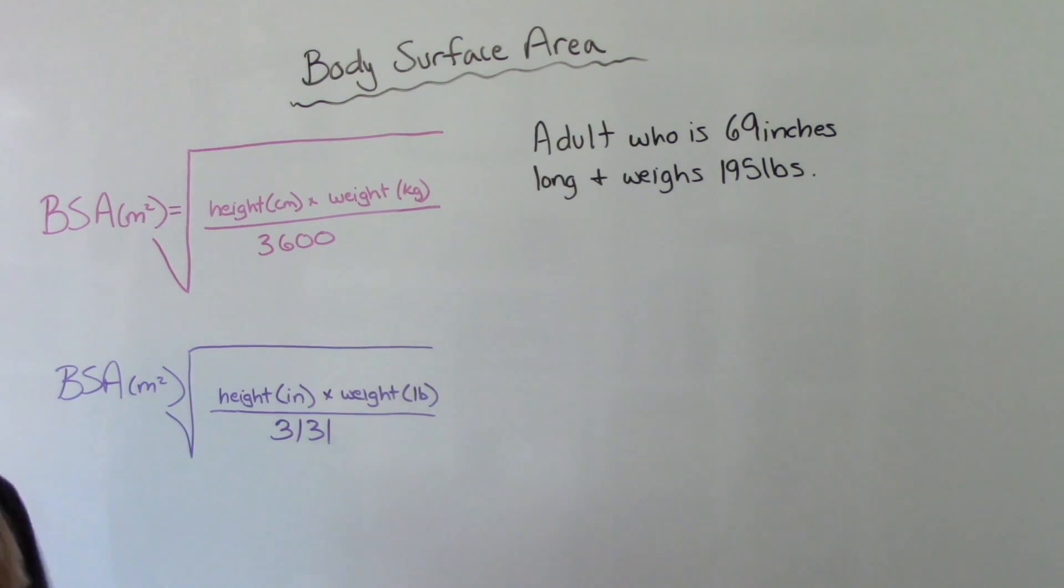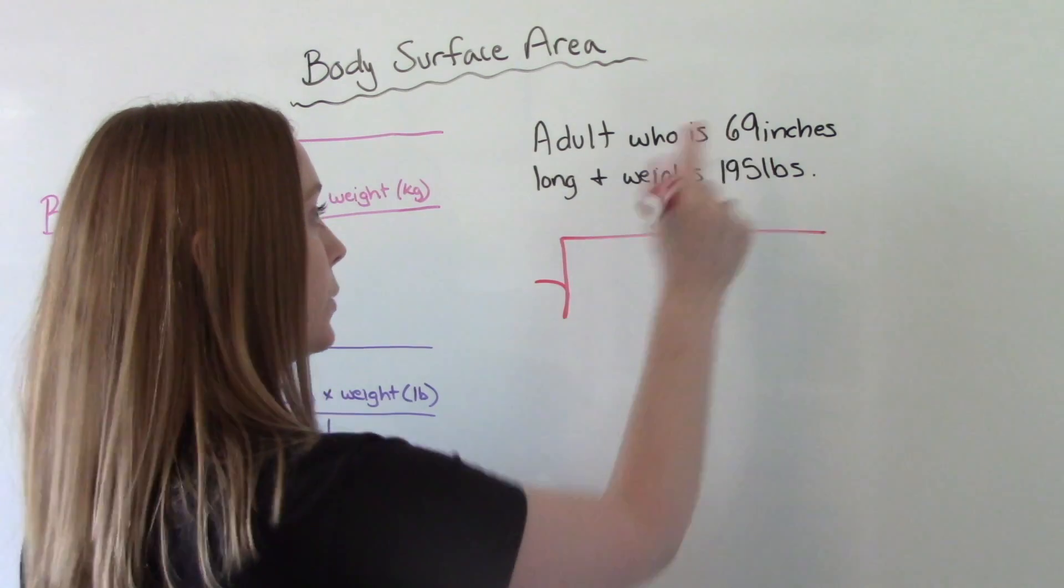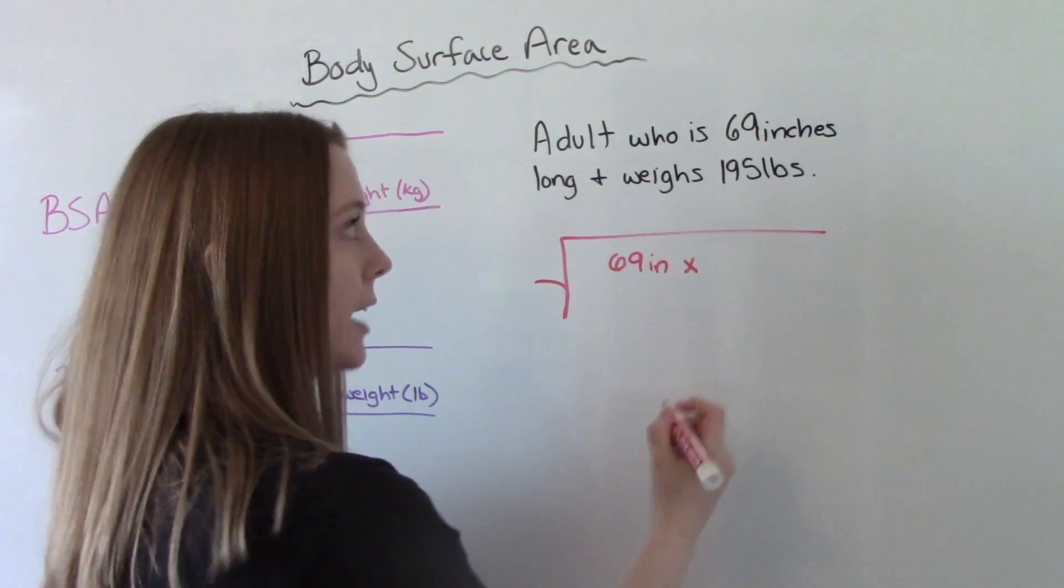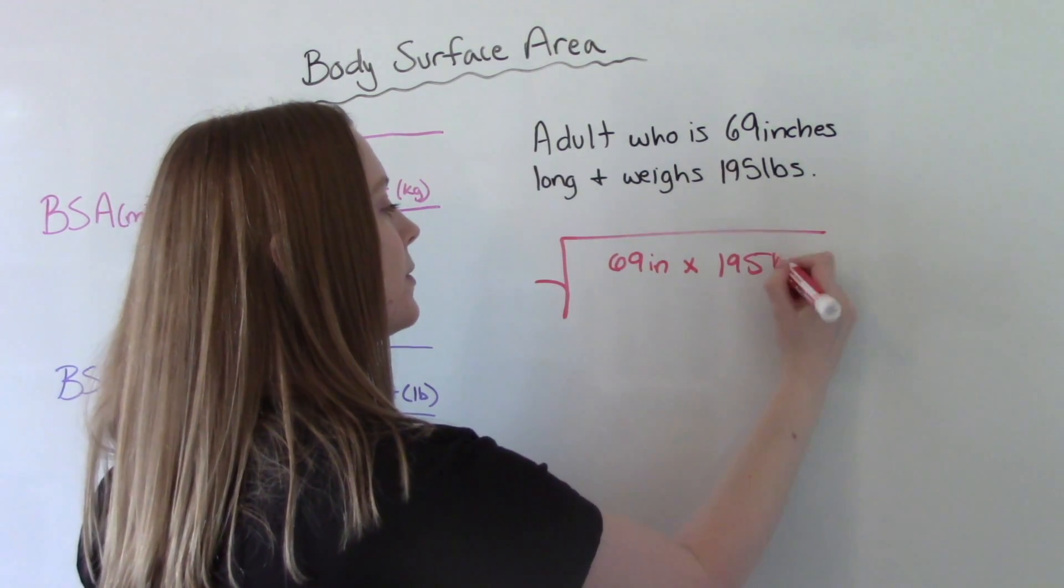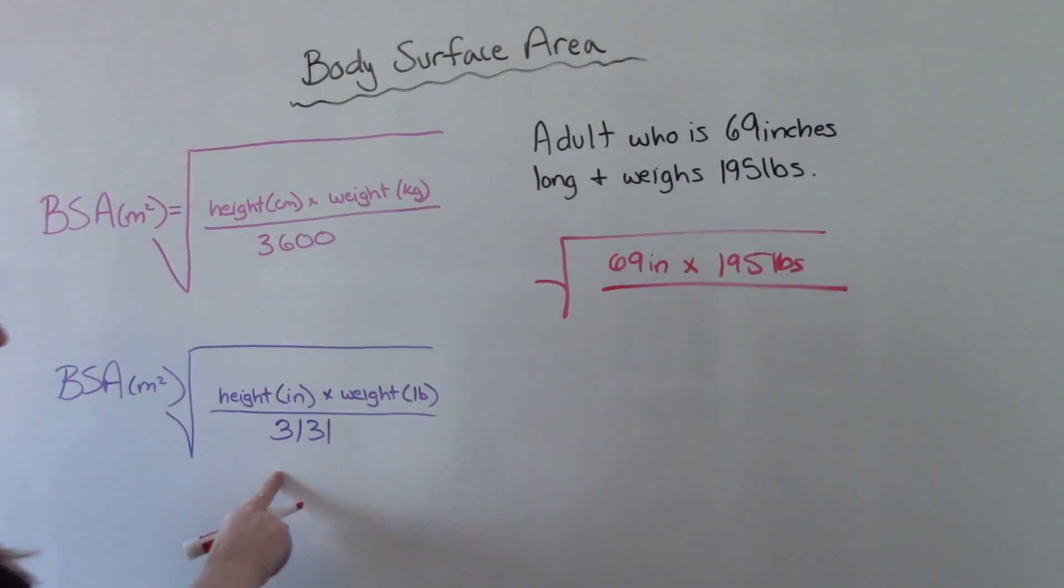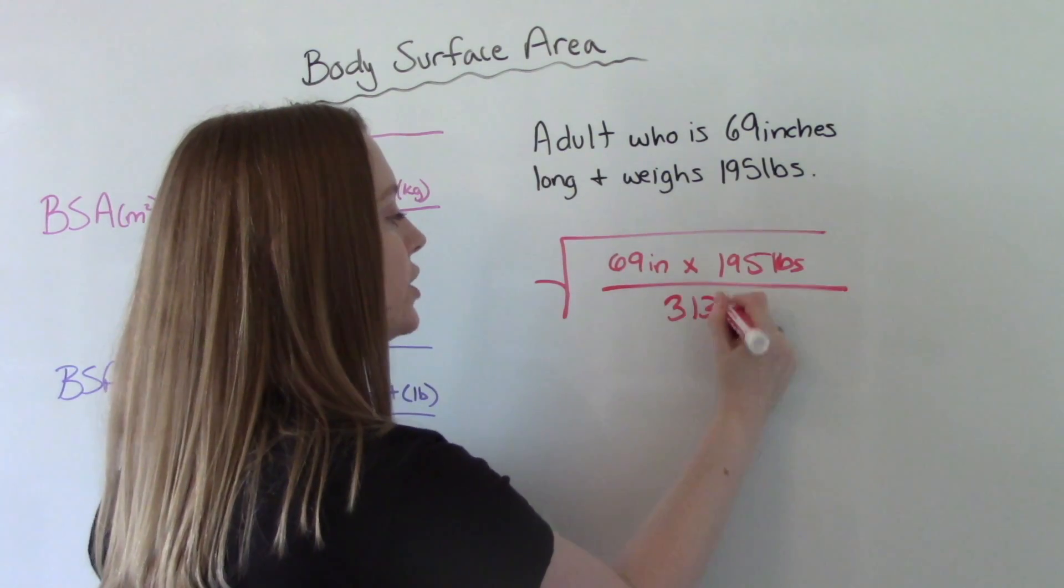But it's the same concept. You have to plug in these numbers. So we're 69 inches times 195 pounds divided by 3,131. And that number never changes either.